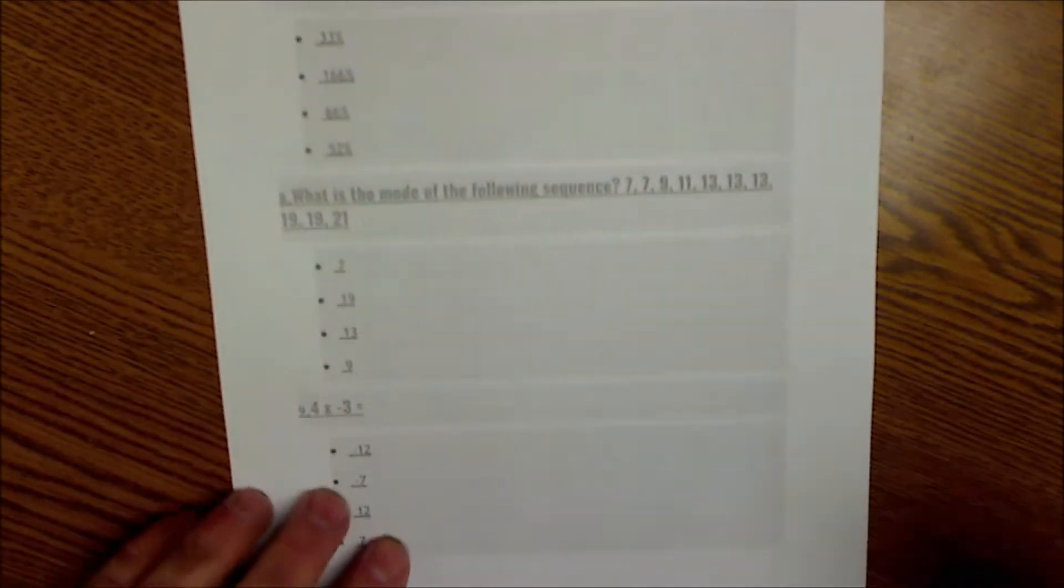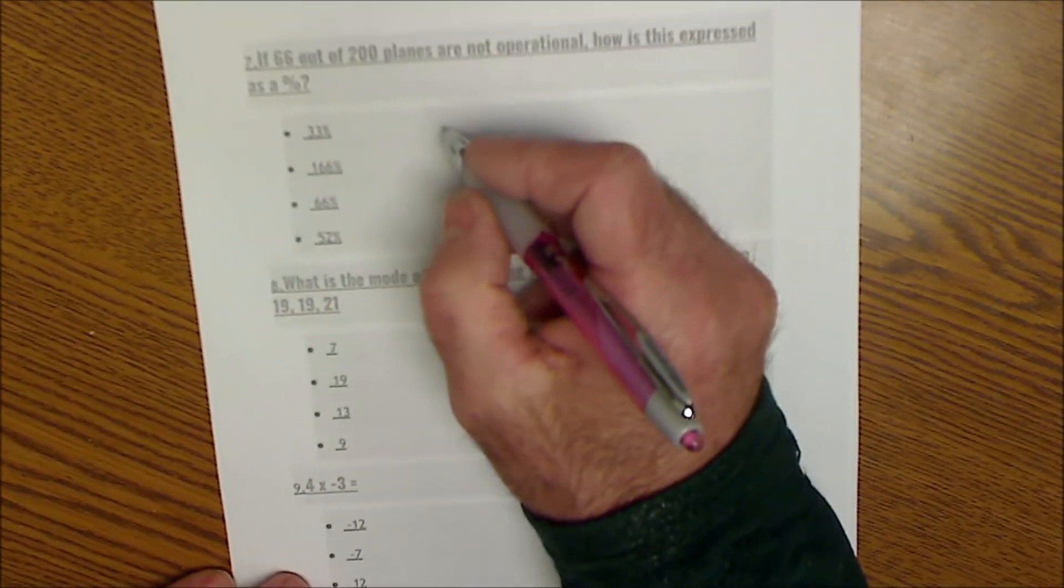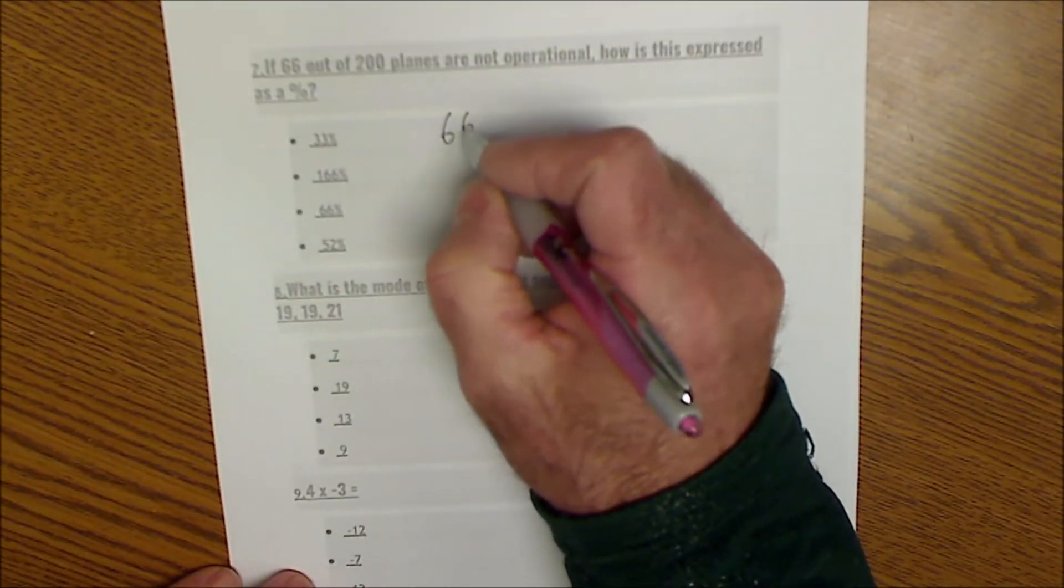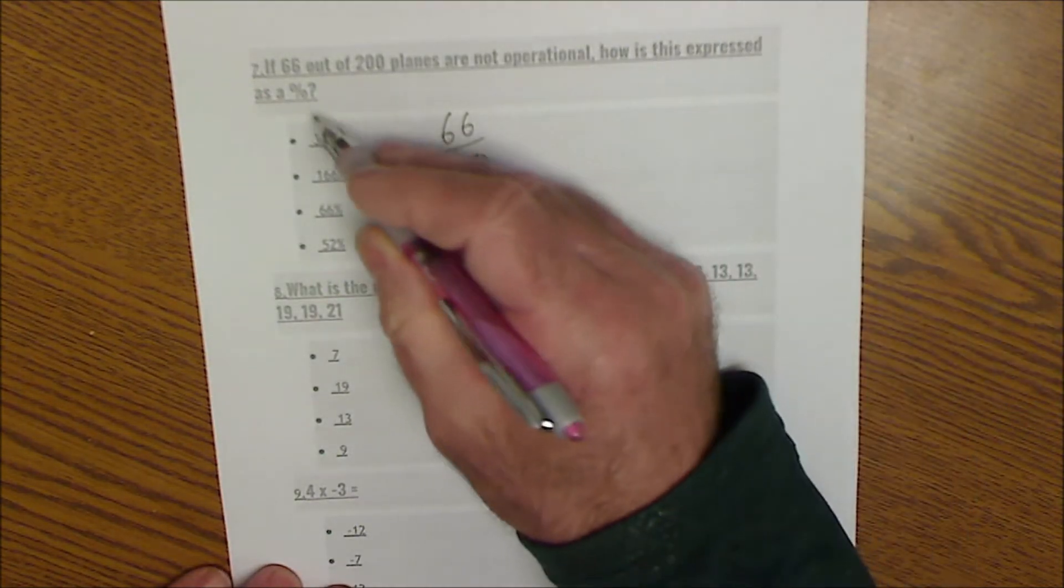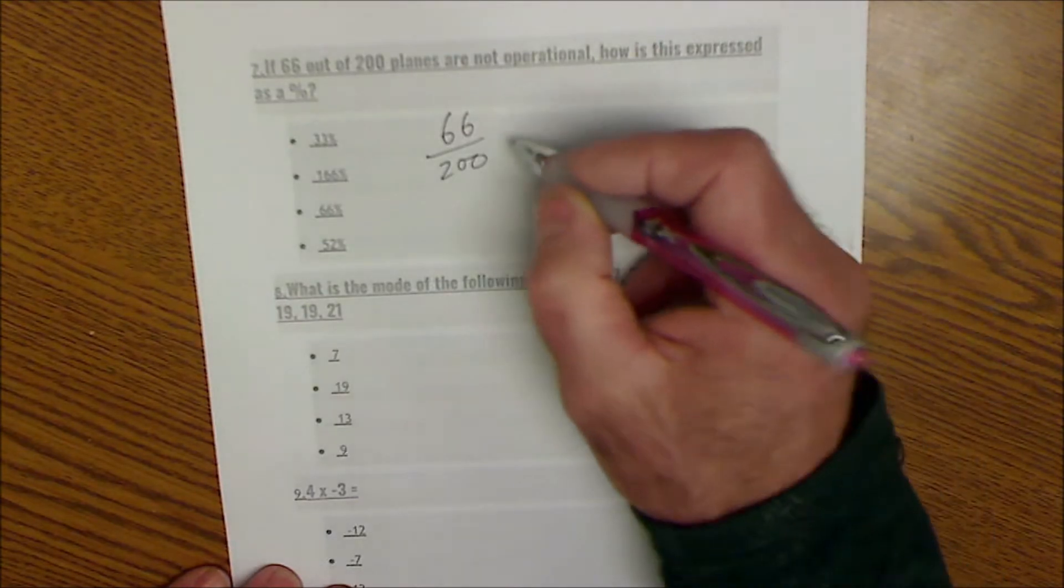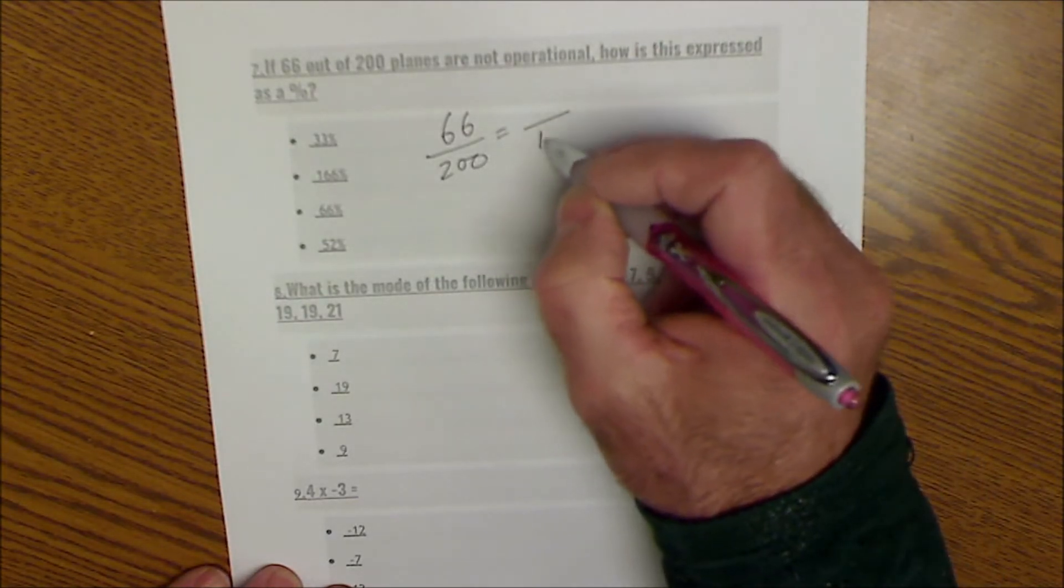Number seven, 66 out of 200 planes are not operational. How does this express as a percentage? Well, that's the same thing as something over 100.